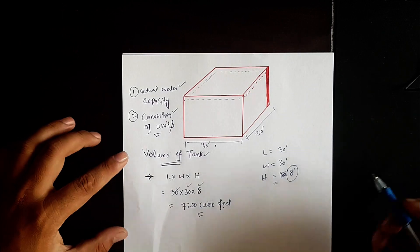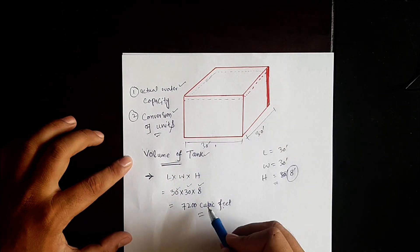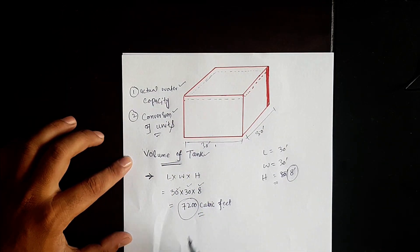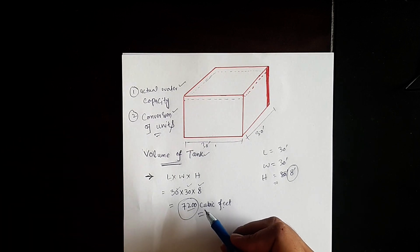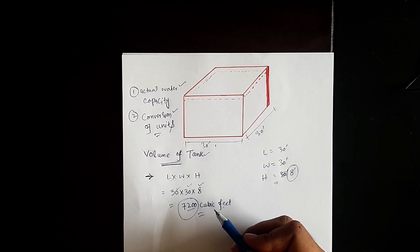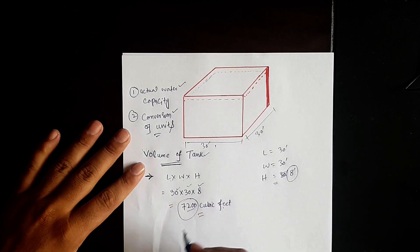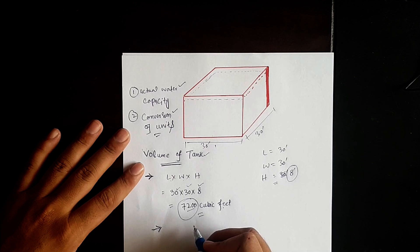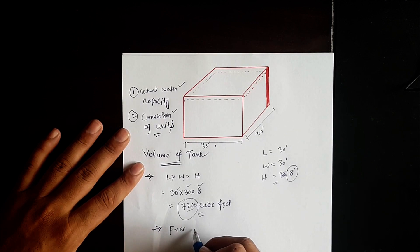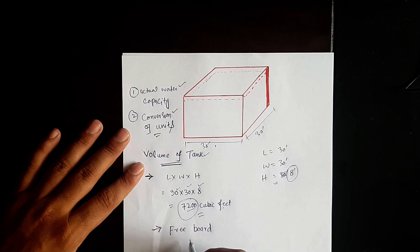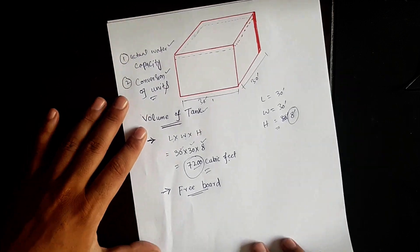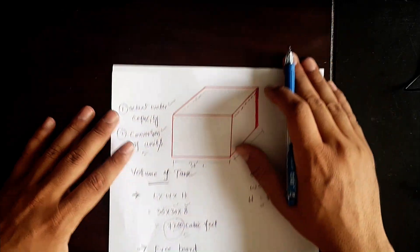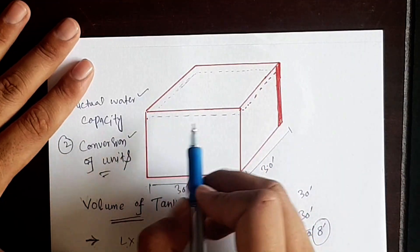Now, what I want to tell you is: what will be the actual water capacity of this water tank? It is not going to be 7200 cubic feet — it will be less than that. The reason is because of what is called freeboard. Freeboard is actually the top surface clearance.